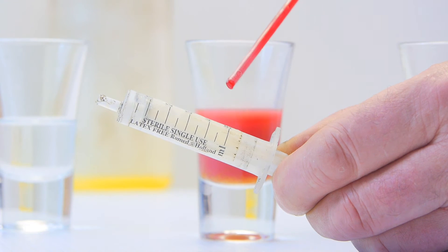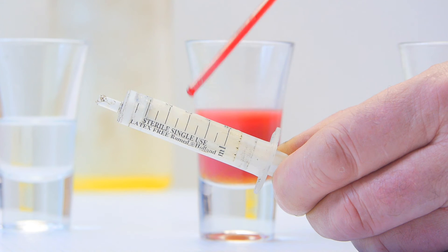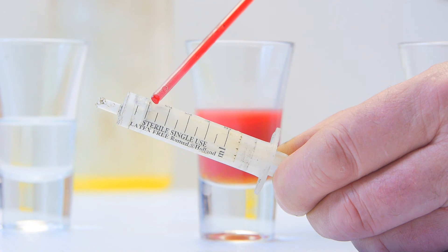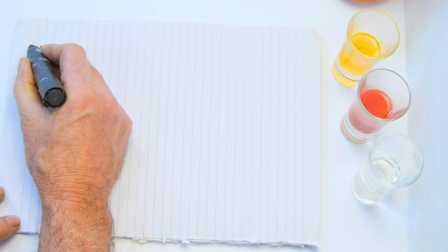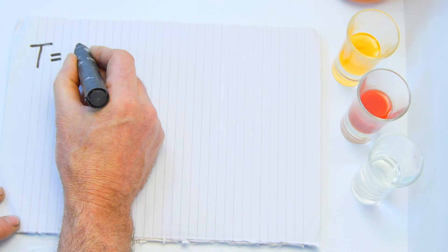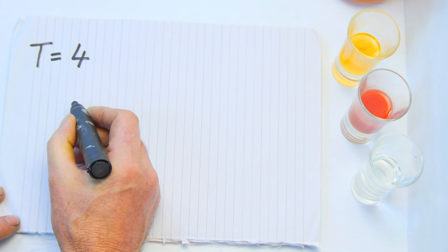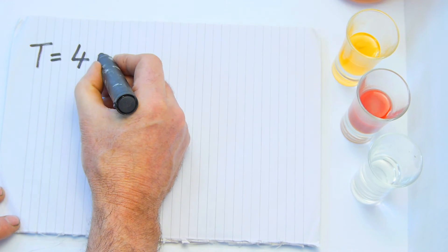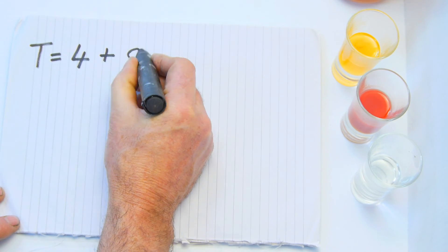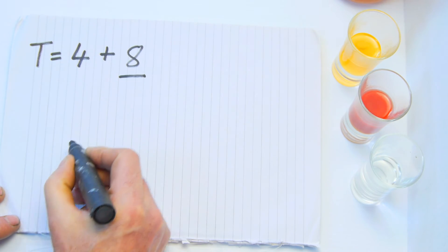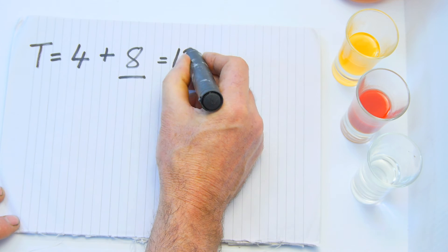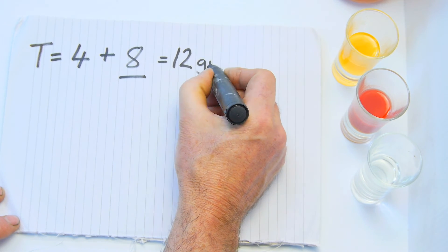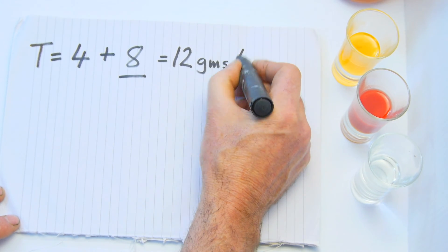Now, count the number of milliliters that you have used. In this case, I have used four milliliters. So that means that the titration or T is equal to four. Add that to the base amount of eight. You always use eight. And that gives you 12, 12 grams per liter, 12 grams of potassium hydroxide per liter of oil.